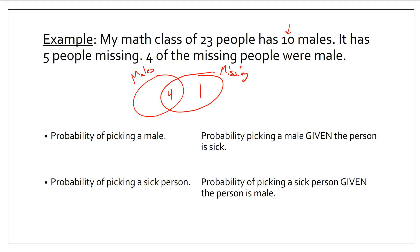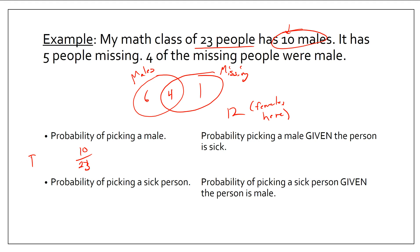Since I have 10 males and four are already in the overlap, I have six males that weren't missing. With 23 people total, I have 11 people inside the bubbles, which means 12 people are outside the bubbles — those are females who were present in class. First, the obvious: what's the probability of picking a male? There are 10 males out of 23 people, so that's 10 out of 23. I'd denote that as the probability of picking a male.